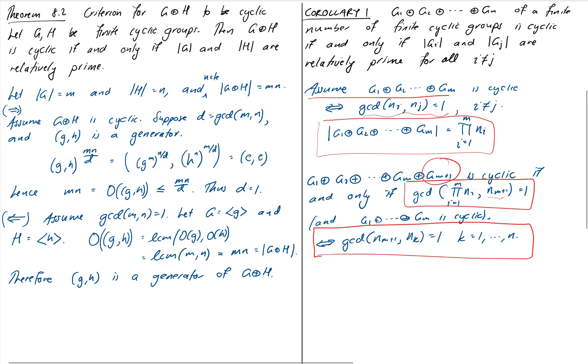There's one more corollary, the same thing but written in terms of our Z groups. It says that Z of n1 times n2 times nk, a cyclic group, is isomorphic to an external direct product of the factors if and only if each of those things is relatively prime. So for example, we can say some things directly.